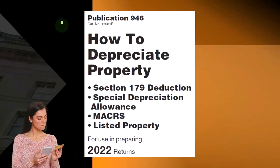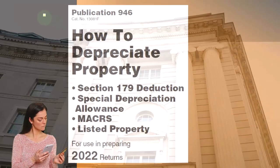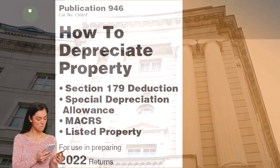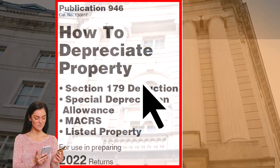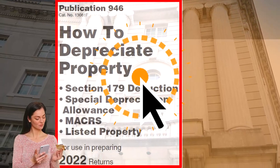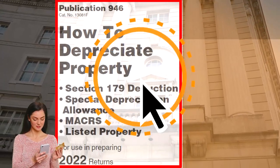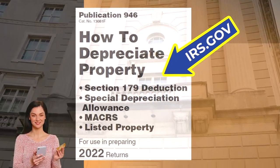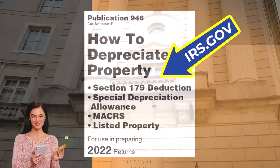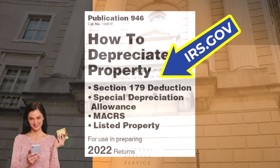Most of this information comes from Publication 946, 'How to Depreciate Property,' tax year 2022. You can find it on the IRS website at irs.gov.